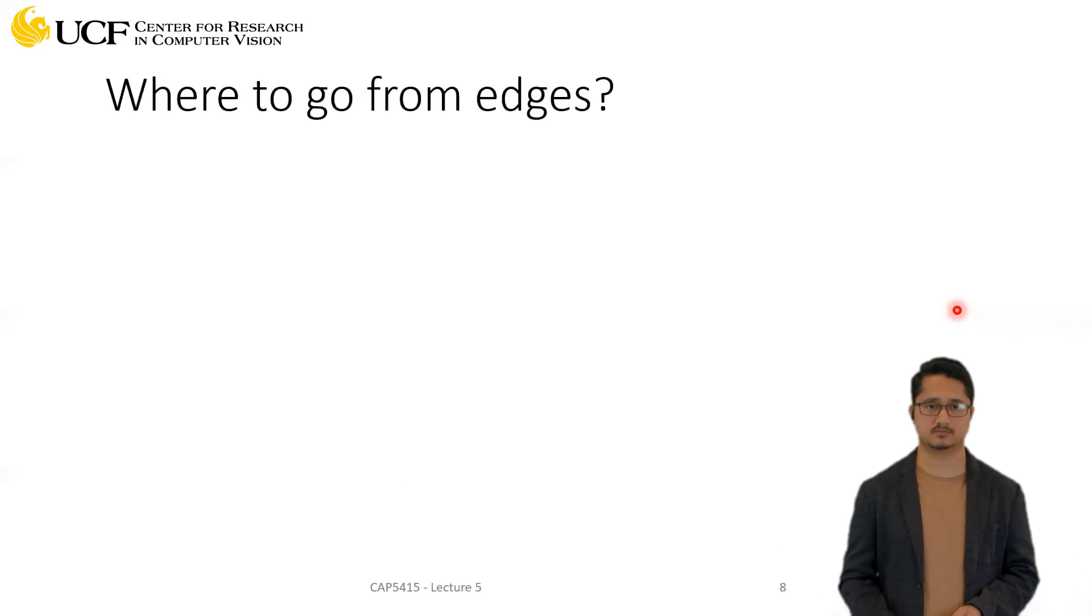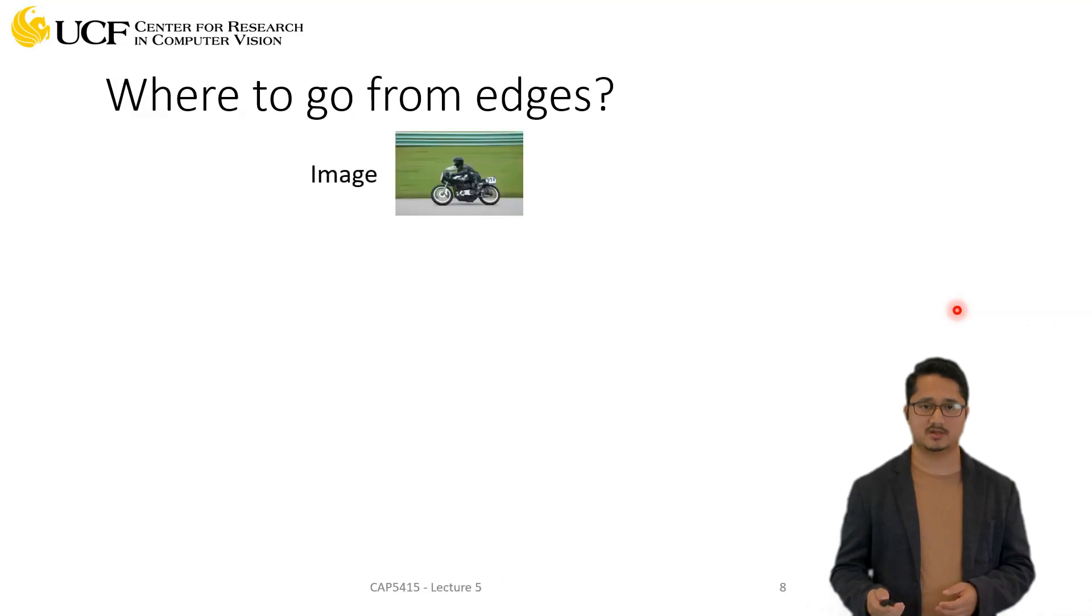So far in the course, we have seen that given an input image, we can detect edges. That's just the beginning. If the end goal is to actually detect edges, your problem is solved. But usually in real-world applications, you want more than that - not just detect edges. So the question is, once we have detected these edges, where can we go from here?